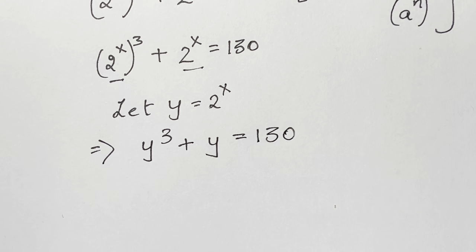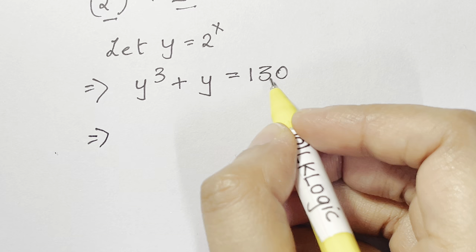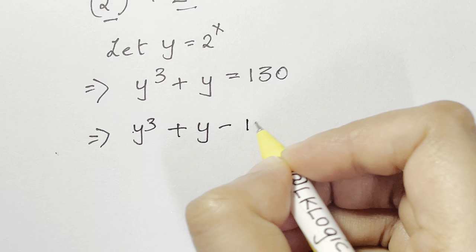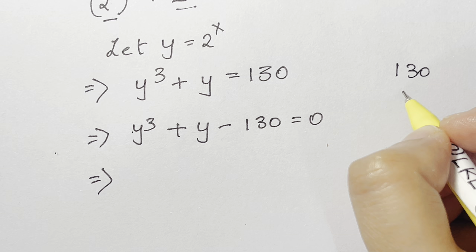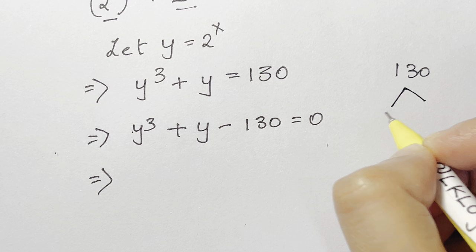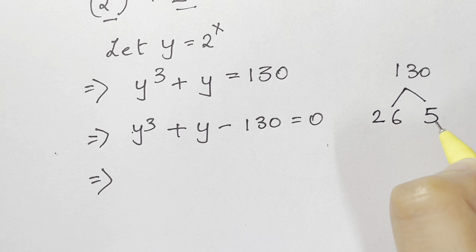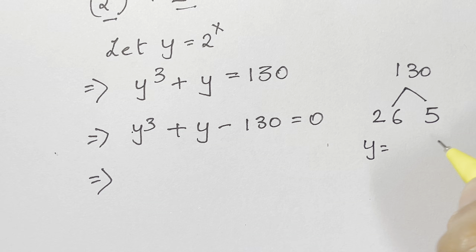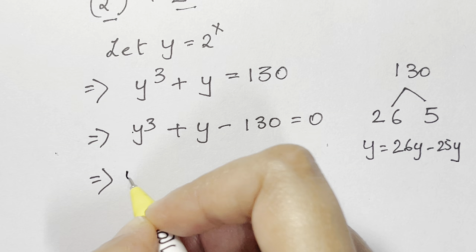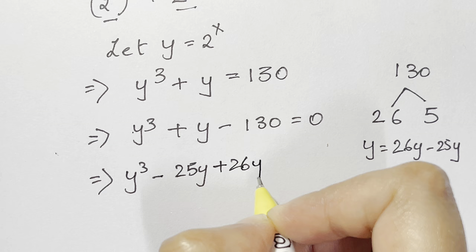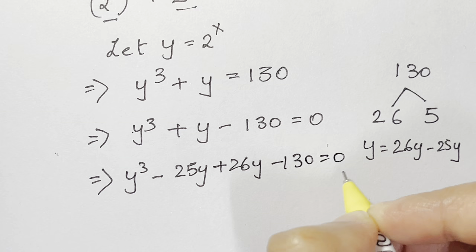A cubic equation should have three solutions. Bringing 130 to the other side: y cubed plus y minus 130 equals 0. Now, 130 can be written as 26 times 5. So I can write y as 26y minus 25y, since 26 minus 25 equals 1. Substituting, we get y cubed minus 25y plus 26y minus 130 equals 0.